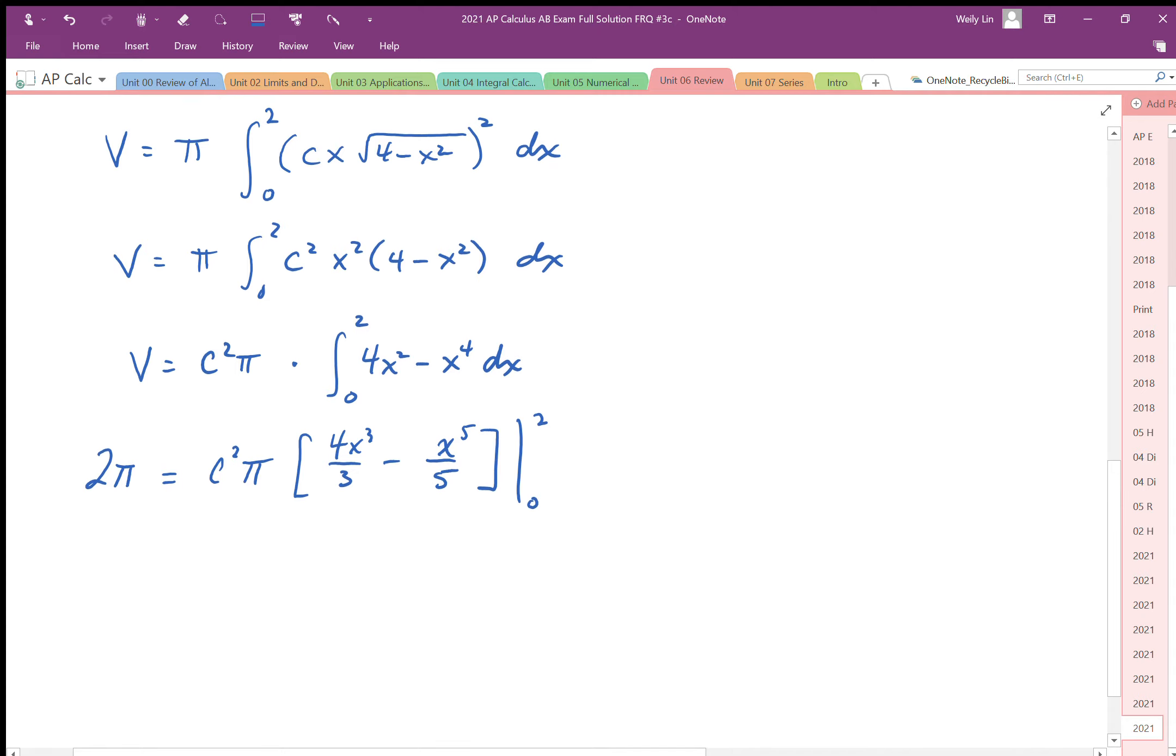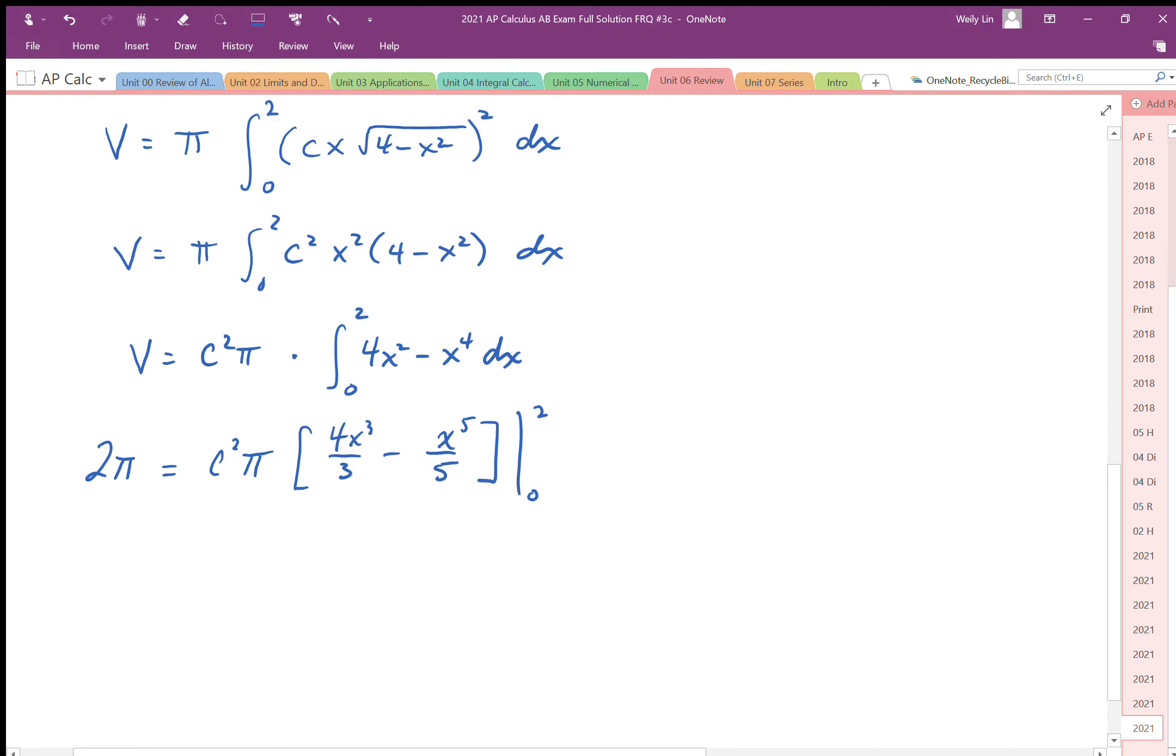Okay, so then I need to solve this equation. I need to work out this portion. So again, I'm going to write it as 2π = c²π. I can see that the π's are going to cancel out, but I'm going to work this out first. Plugging in 2, I get 4 times 8, which is 32/3, minus 2 to the power of 5, which is 32/5, and then when I substitute 0 in I get 0.